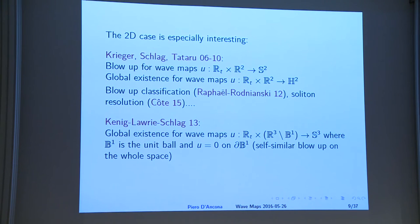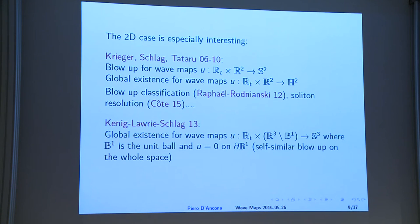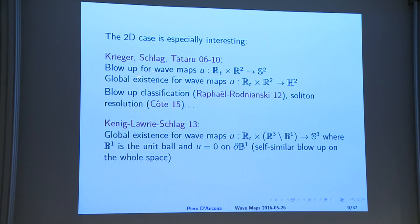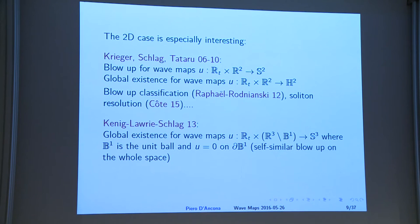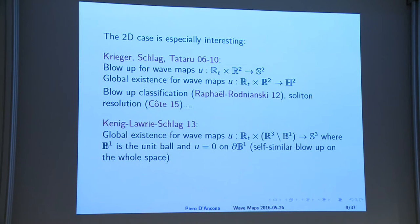The 2D case is especially interesting because the critical space is also the energy space H^1, so you have the question of whether the local solution can be continued. This is where the geometry of the target really comes into play. For instance, if the target is the two-dimensional sphere you have blow-up; if the target is the real hyperbolic space you have global existence. There is ongoing blow-up classification and Côte proved a nice soliton resolution in the case of a sphere.